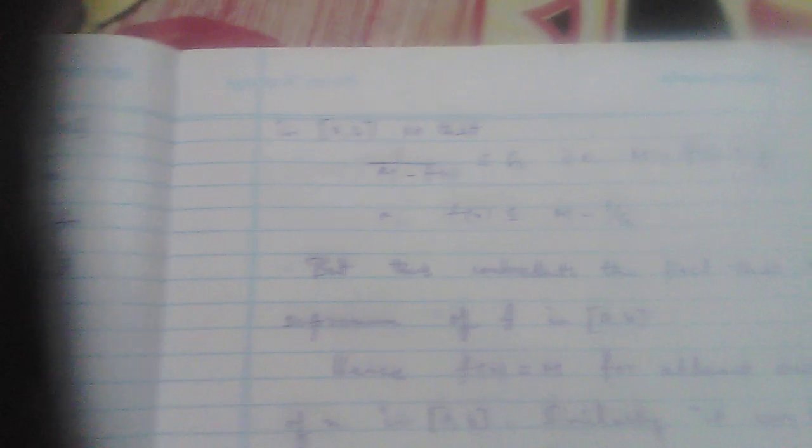So we have 1 / (M - f(x)) ≤ G for all x in [a, b], because G is the upper bound. No value of x in the interval will give a result greater than G. From this simple calculation, we find that f(x) ≤ M - 1/G.